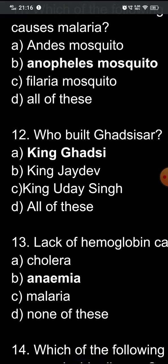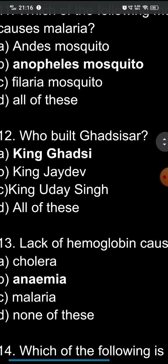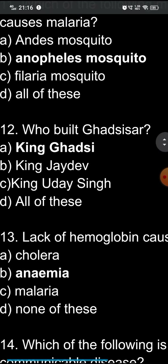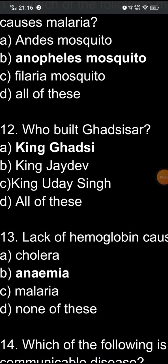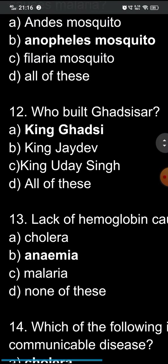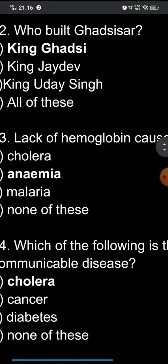Question thirteen: lack of hemoglobin causes which of the following? The options are: A) cholera, B) anemia, C) malaria, D) none of these. The correct answer is option B — anemia. Due to the lack of hemoglobin, or lack of blood, in our body, it causes anemia.